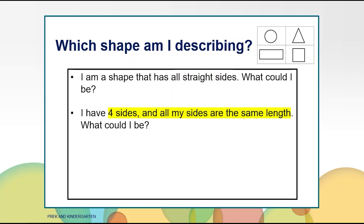Here is the second clue for the same shape. Listen carefully. You may decide to keep your counter where it is or you may want to move it to another shape after this clue. I am a shape that has all straight sides. I have four sides and all of my sides are the same length. What could I be? Put your counter on the shape you think I am talking about.